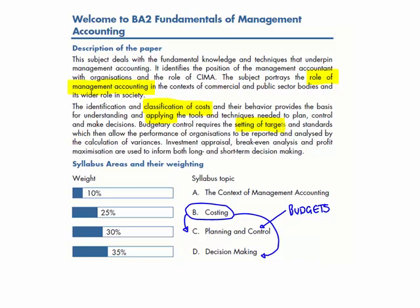The control side of this is about being able to actually perform detailed comparisons — this is what I expected, this is what I budgeted, based on information from things like my costing calculations — compared to what actually happened. This is what is called variance calculations. Within the paper there are a number of different variances you would be expected to calculate, filtering into the control element: making comparisons between what we expected to happen and what actually happened, then using that information to make changes within the organisation.